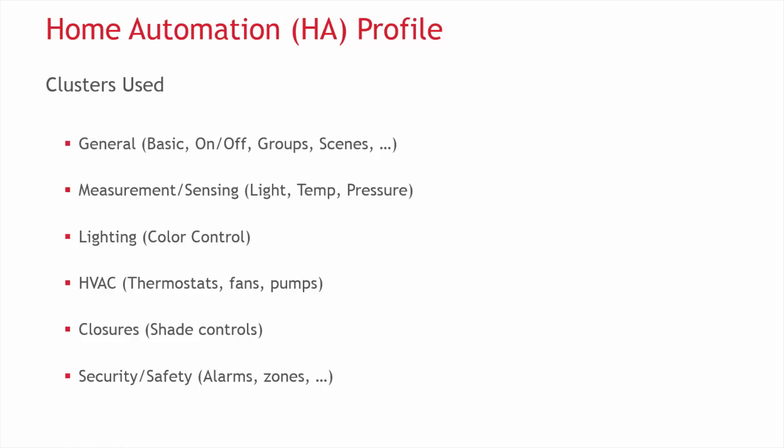The security safety and other functional domains contain clusters including light sensing, color control, thermostat, shade control, and alarm clusters respectively. There are many other clusters not mentioned, but they can all be found in the HA spec.